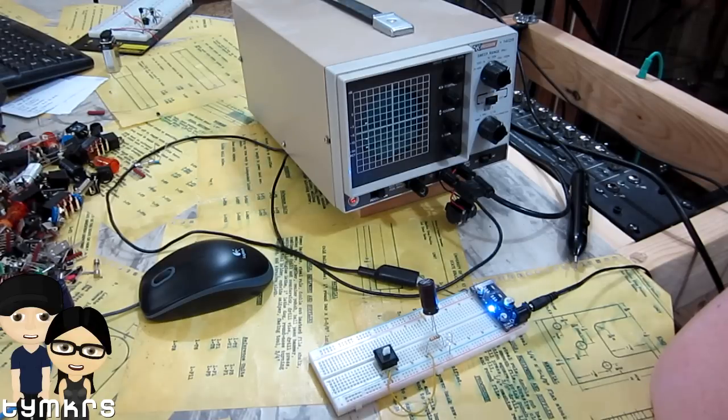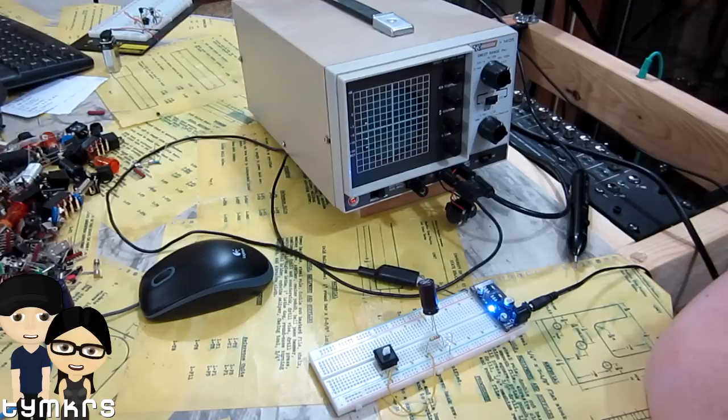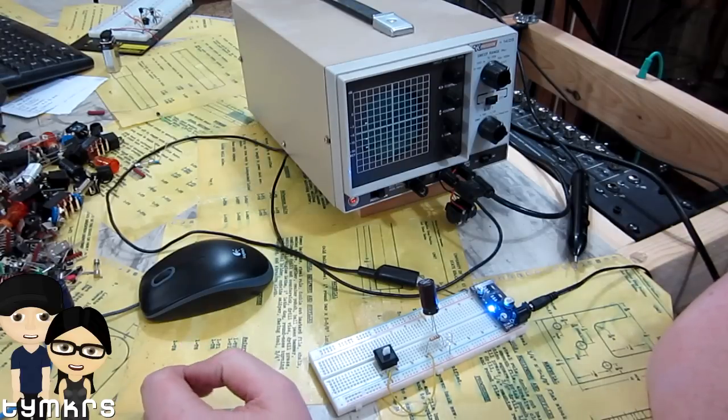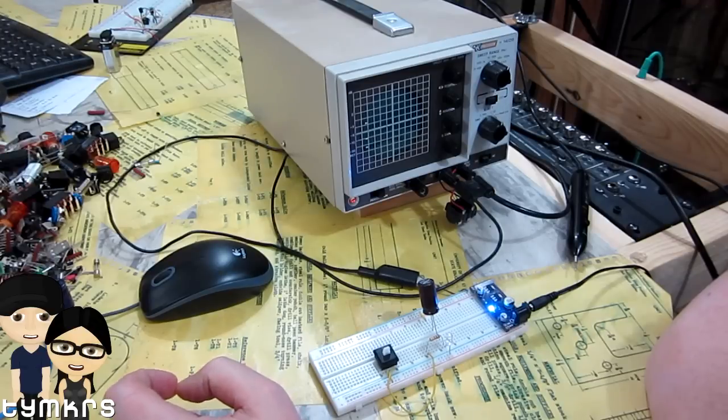Part of it is understanding ADCs and DACs and all that good stuff. One of the major building blocks of a digital to analog converter that we've talked about many times before is using pulse width modulation into a low pass filter.